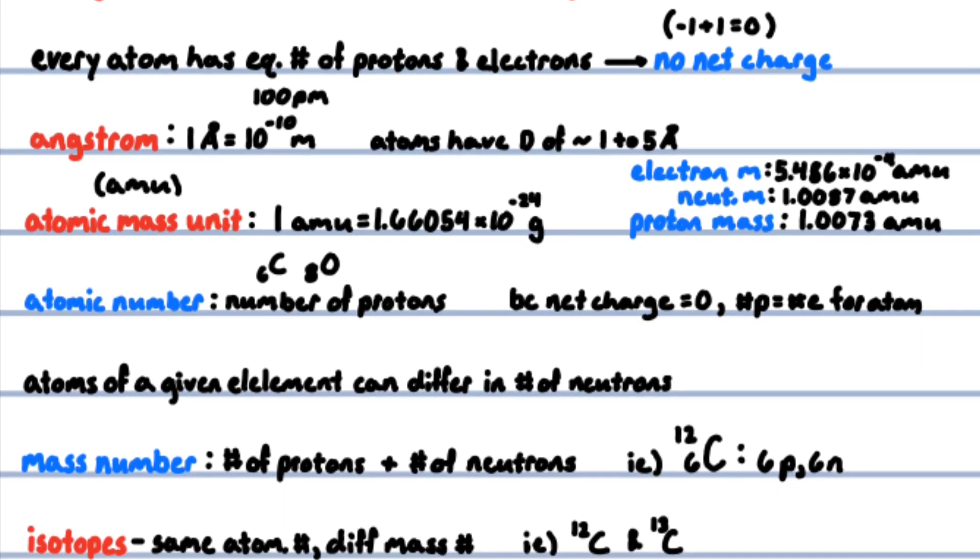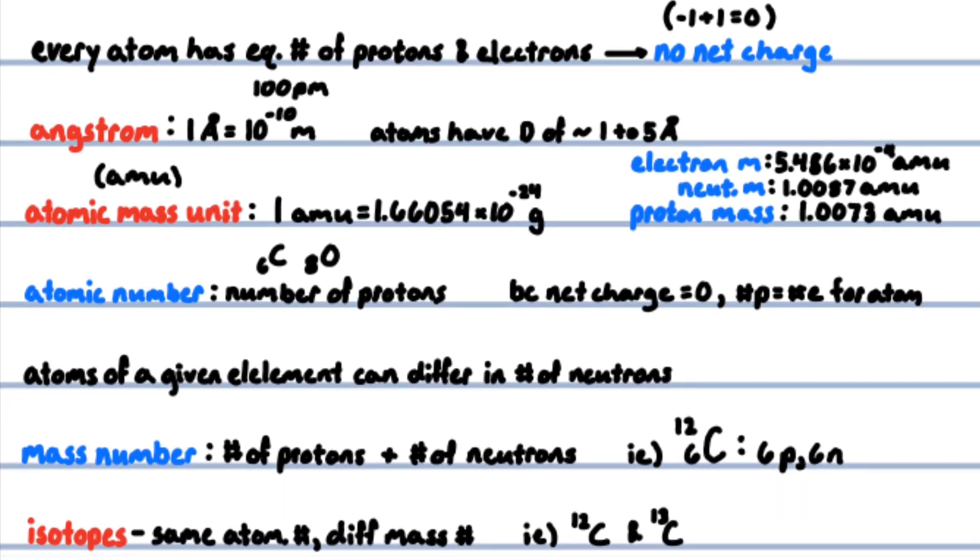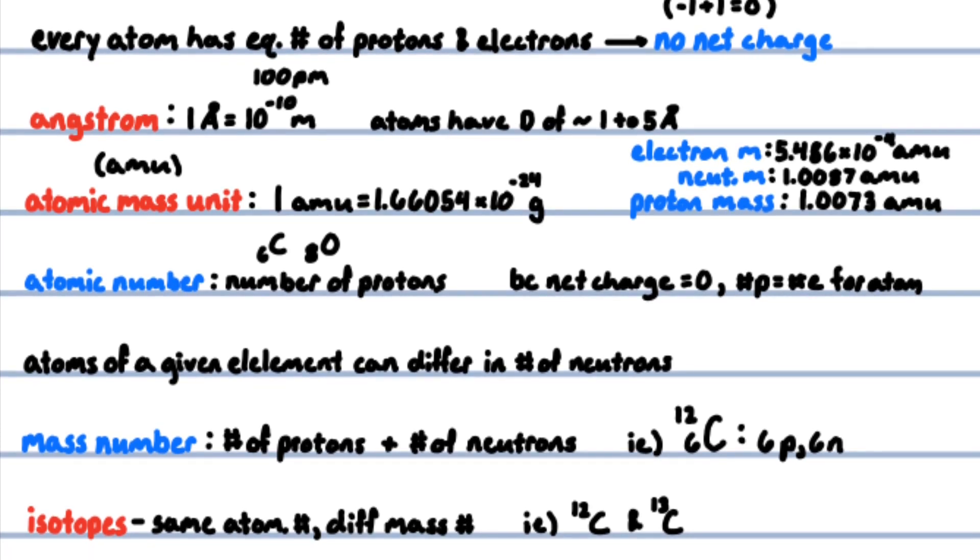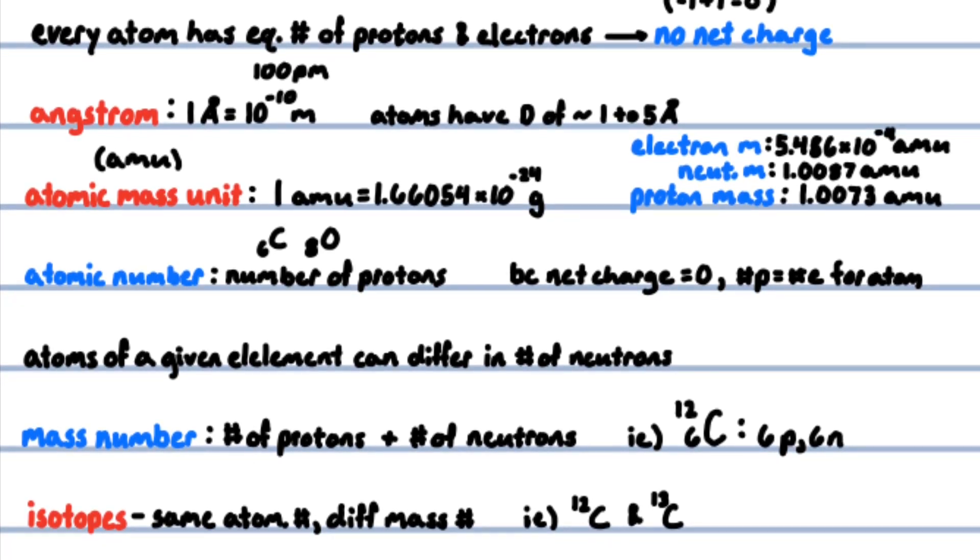The atomic number of an element is the number of protons in the atom. Because there is no net charge in an atom, the number of electrons equals the number of protons. For example, all atoms of carbon have six protons and six electrons, while oxygen has eight protons and eight electrons.